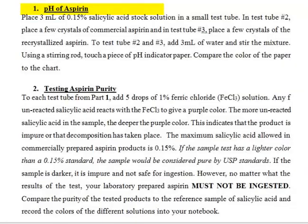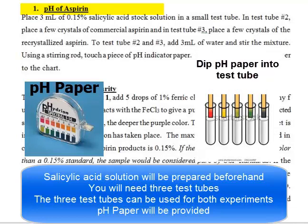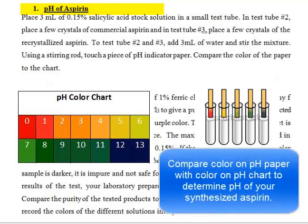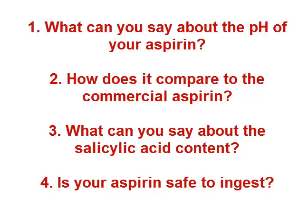In this experiment we're going to do two things: test pH as well as test aspirin purity. We'll get three test tubes — one with salicylic acid, one with our aspirin, and one with commercial aspirin. You test the pH by dipping pH paper into the test tube and comparing the color to a pH color chart, which tells you if something is highly acidic or basic. At the end you want to ask: what can I say about the pH of my aspirin compared to commercial aspirin?